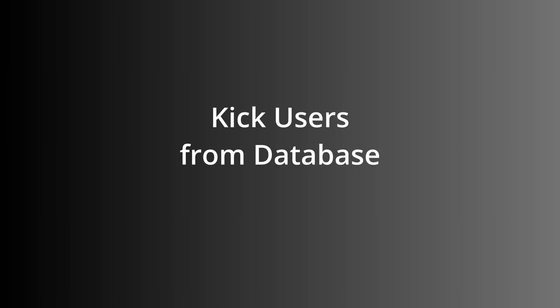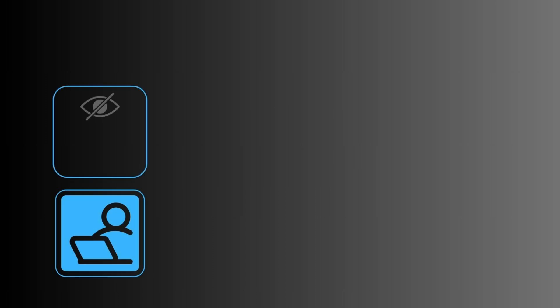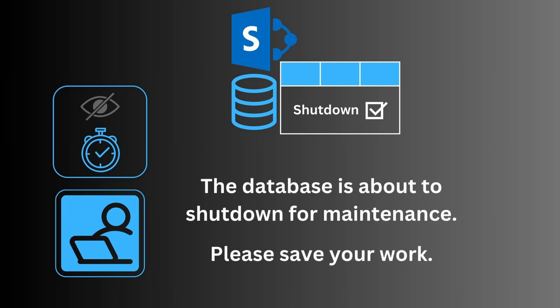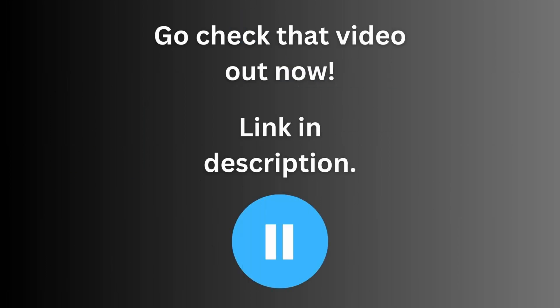The last major thing to consider is how to kick users from the database when you need exclusive access to it. This is really important if something comes up that requires an immediate design change in a form, a query, or code, or if you need to kick everybody out because you've identified a problem that needs to be addressed before any more data interactions occur. I handle this by opening a hidden form at startup with a timer control that runs every two minutes. During the timer event, code checks the value of a field I use as a shutdown flag in a table whose only purpose is to hold that shutdown value. If the shutdown flag is set to true, the user gets a warning message telling them to finish and save their work, and a second timer is started that shuts down the database and doesn't let anyone back in until the shutdown flag is changed back to false. The video with the details on exactly how to do this is linked below.